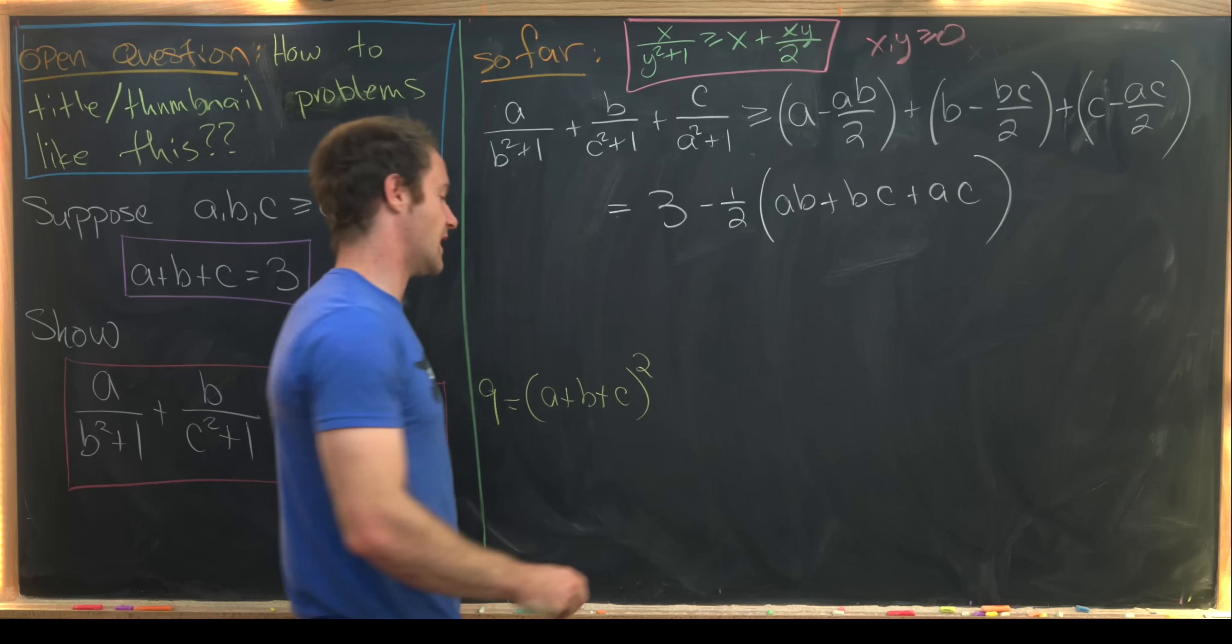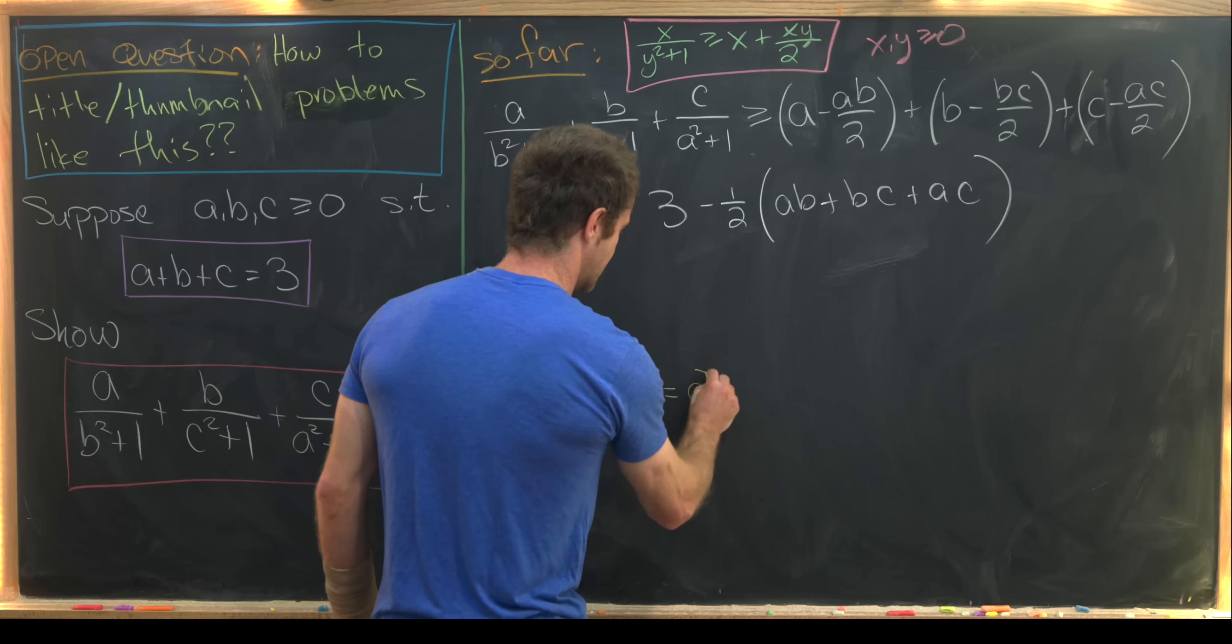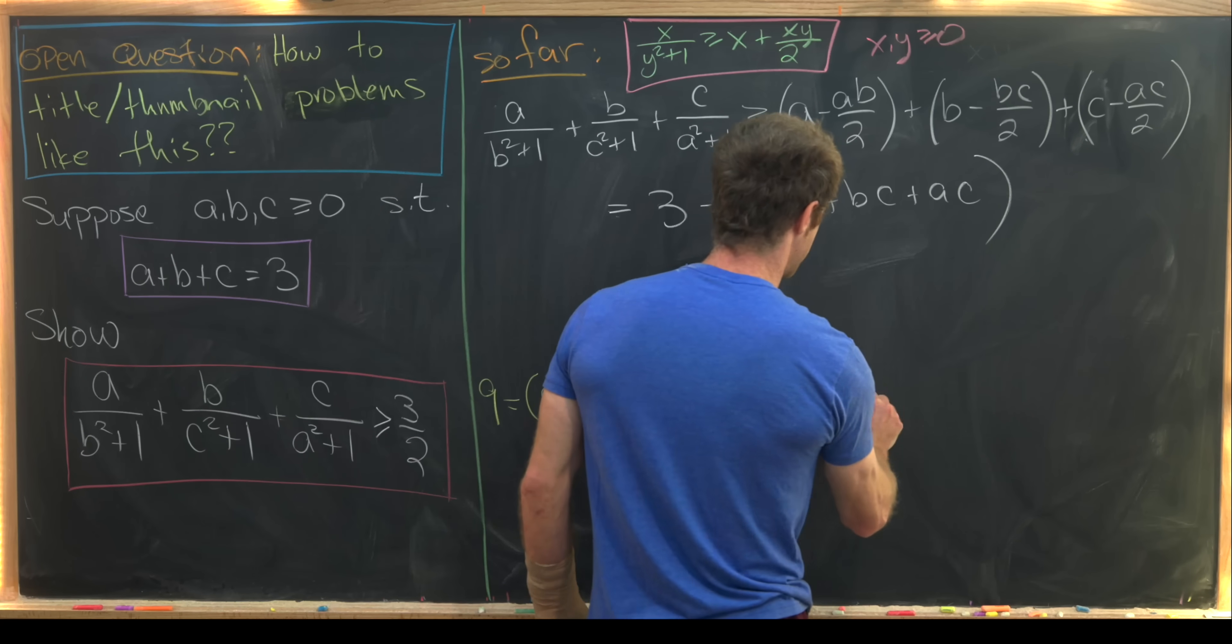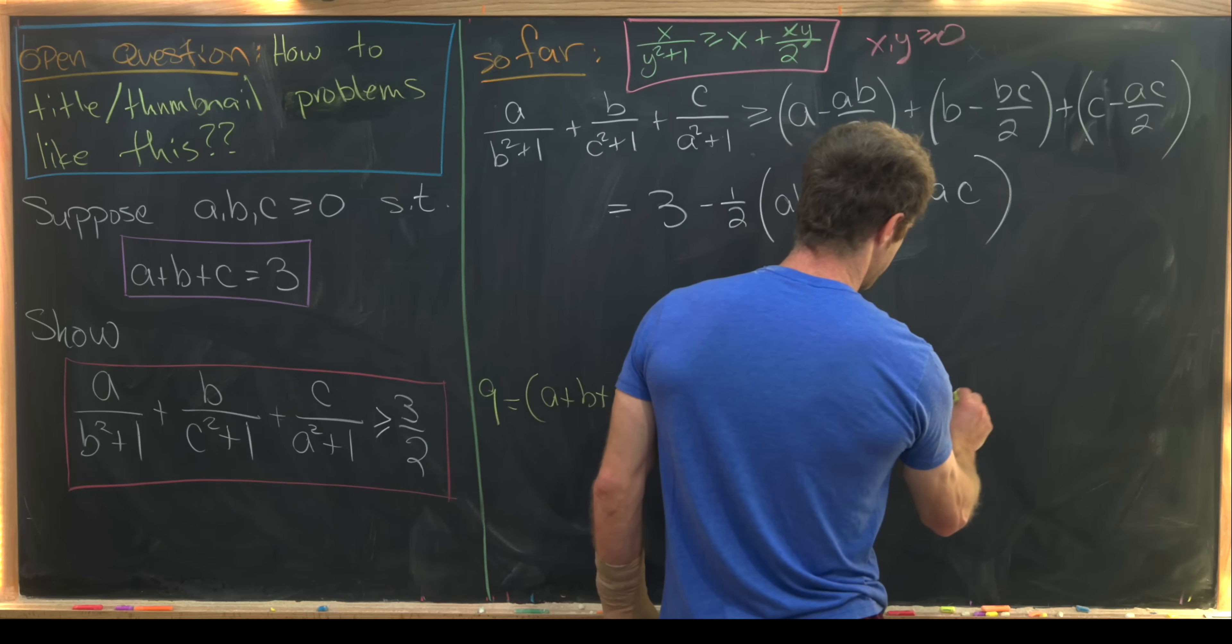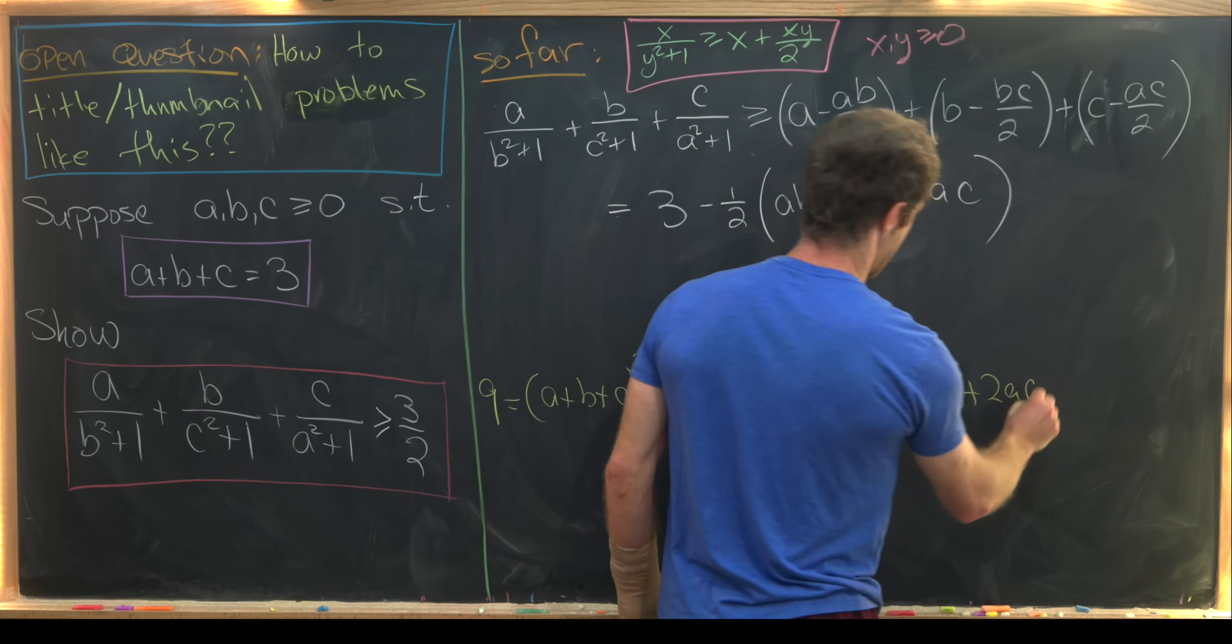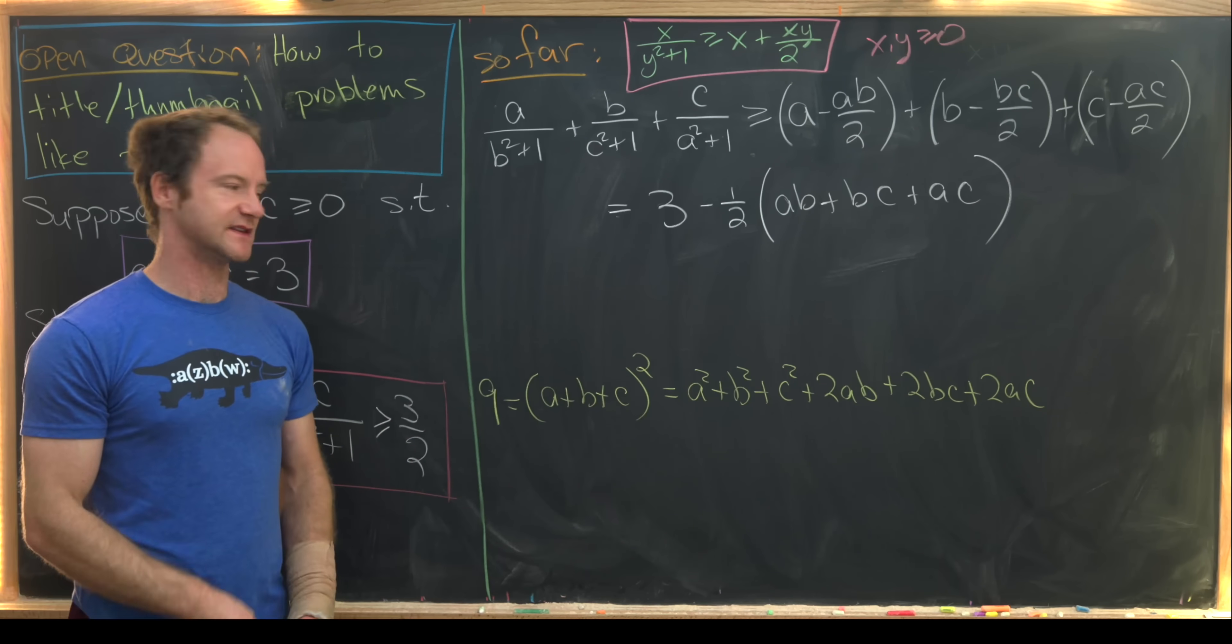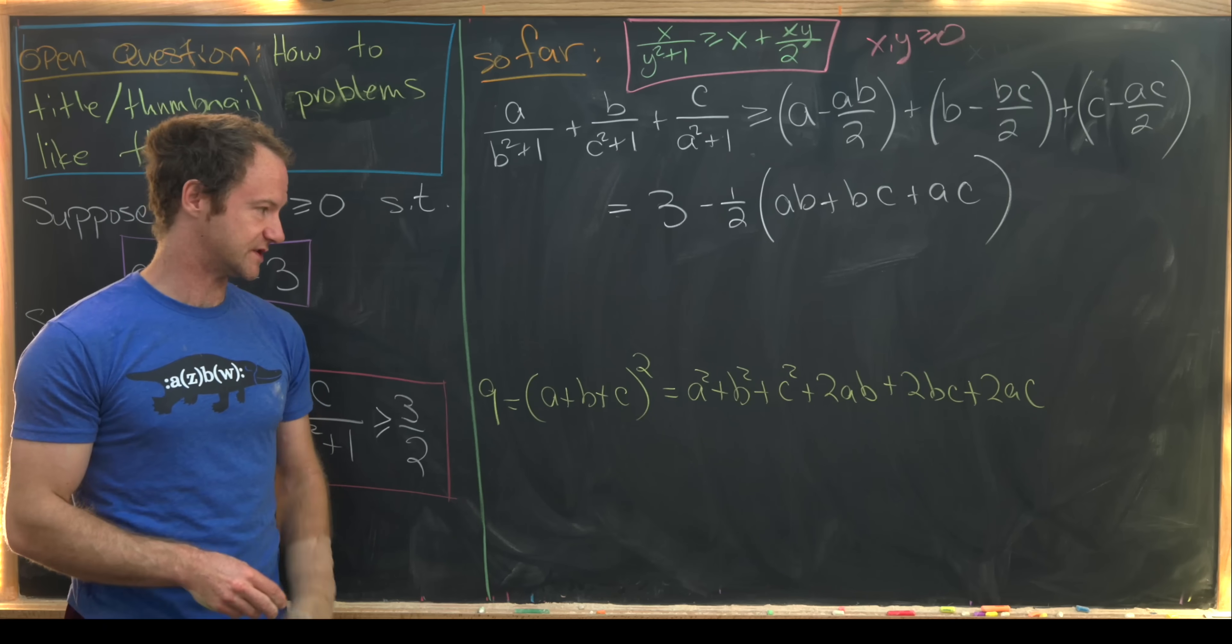But then on the other hand, that's equal to a squared plus b squared plus c squared plus 2ab plus 2bc plus 2ac. So that's just from multiplying this out. It's like trinomial coefficients, if you will.